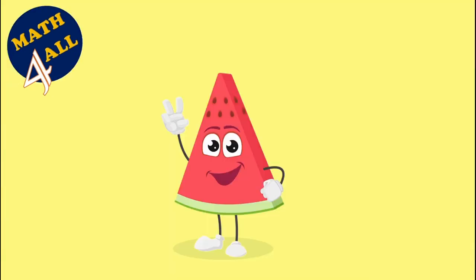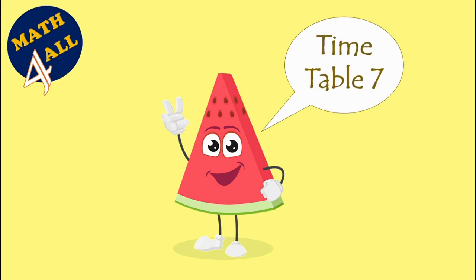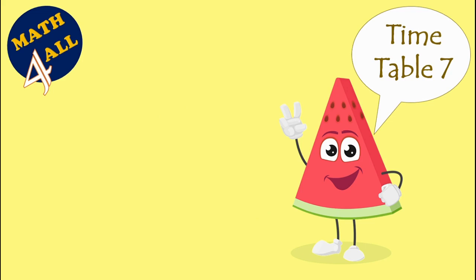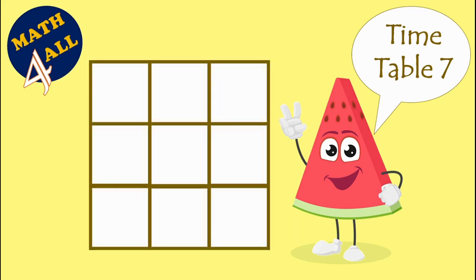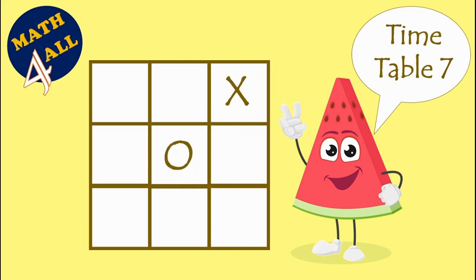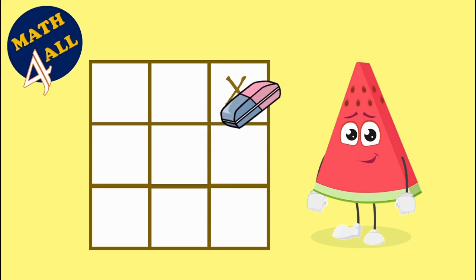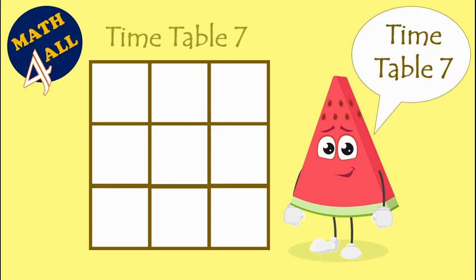Hi everyone! Today we are going to talk about a simple way to solve timetable 7. First, we need to draw a table with nine squares like this. We are not going to play — we are going to try the pattern of 7.